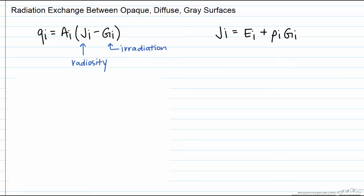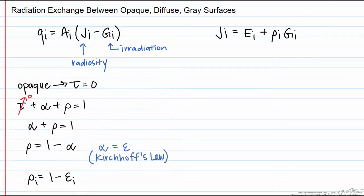Let's put this in a more useful form and use some of the things that we know about this type of surface. The first thing is that our reflectivity is equal to 1 minus our absorptivity since there is no transmittance. According to Kirchhoff's law, 1 minus epsilon or the emissivity.